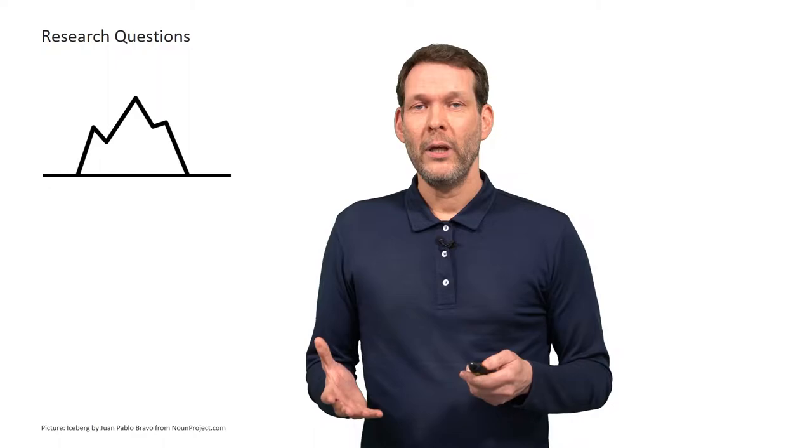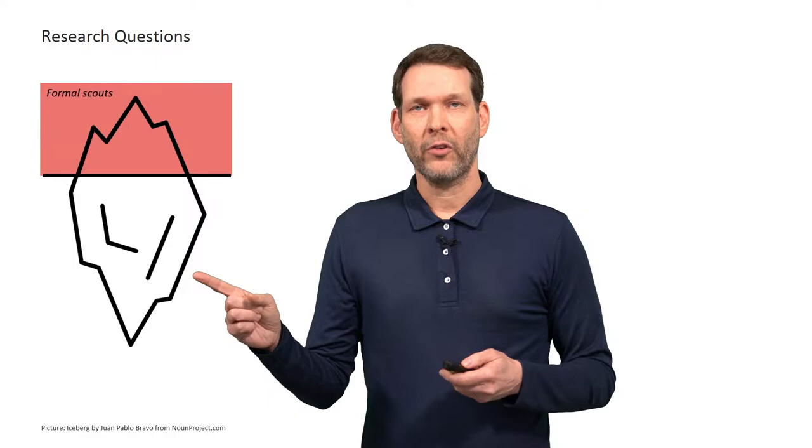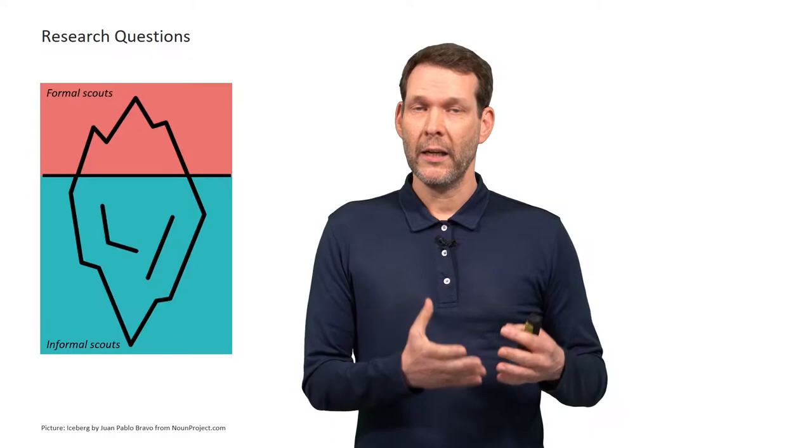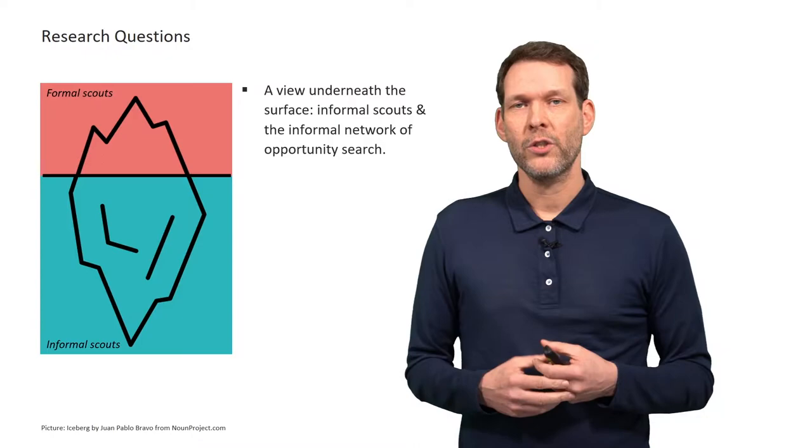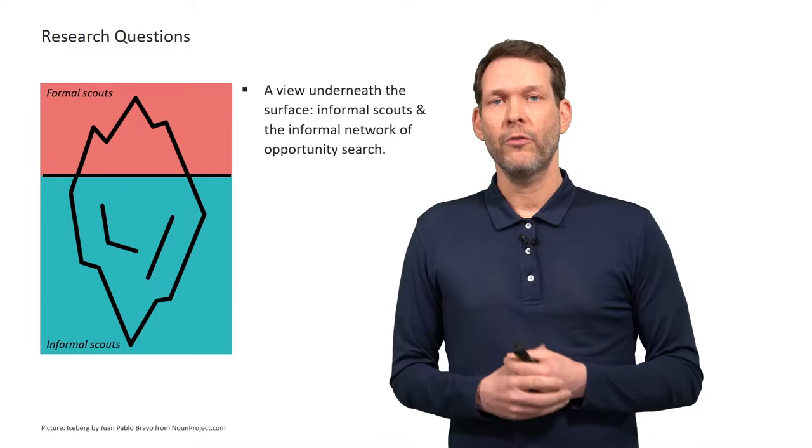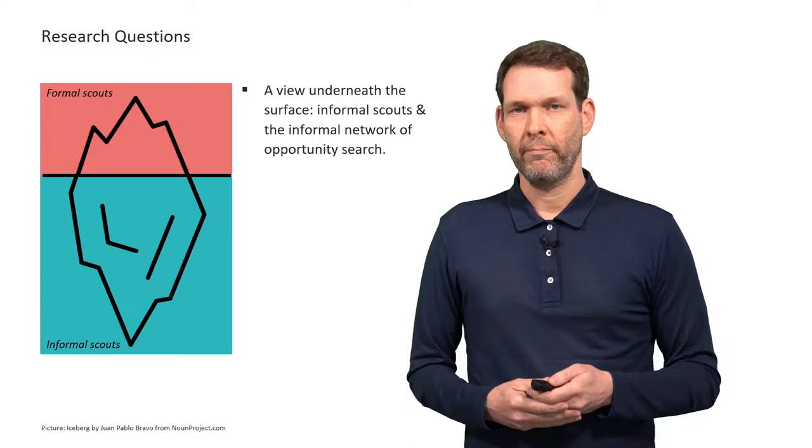In this paper, we propose a distinction between formal scouting and informal scouting as two dimensions of the overall activity of the scouting space. Adopting a relational view and in particular a network analytical approach, our aim is to shed light underneath the surface of formal scouting to include not only informal scouts, but also all the informal relationships that build up the scouting network of a large corporation.